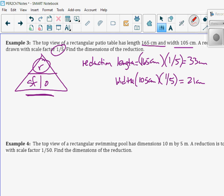If I want the width, that is 105 centimeters times by one divided by five, which gives me 21 centimeters. If they ask you for dimensions, you're supposed to say it as length by width. So dimensions are 33 centimeters by 21 centimeters.